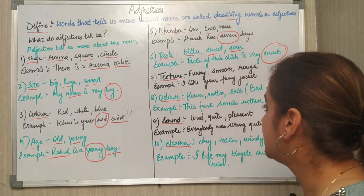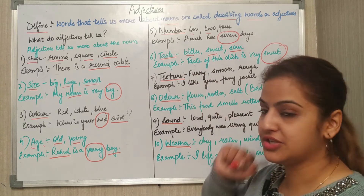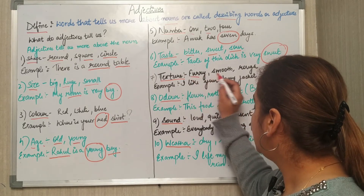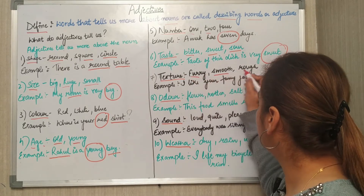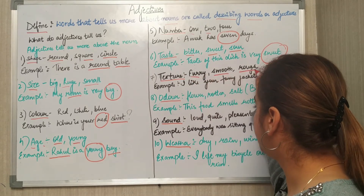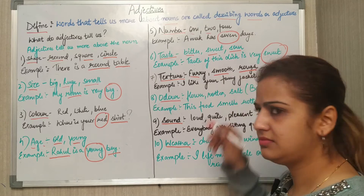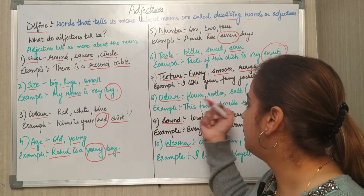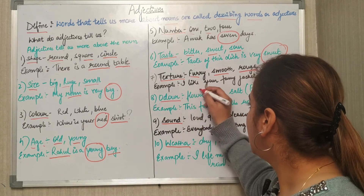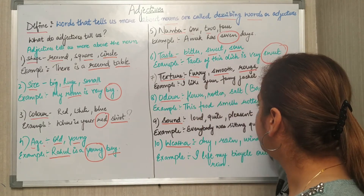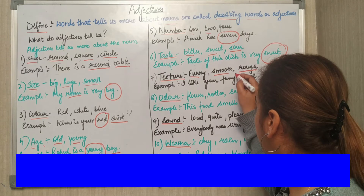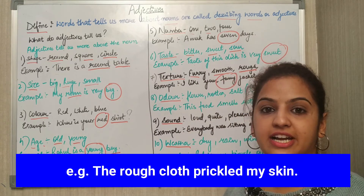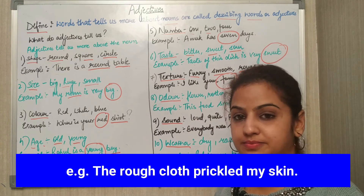Next is texture. Texture could be furry, smooth, or rough — anything. Example: I like your furry jacket. Now here 'furry' is an adjective.